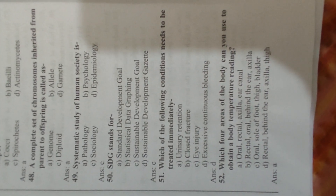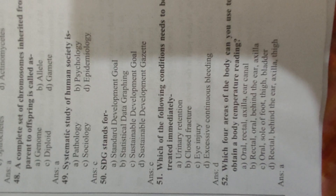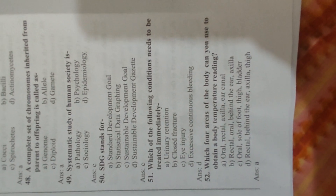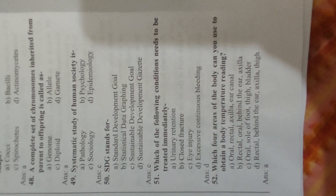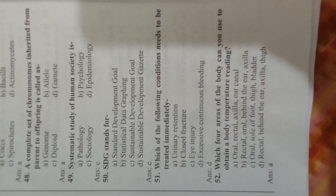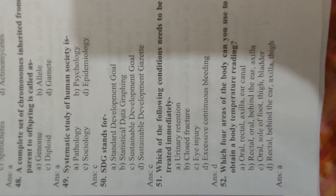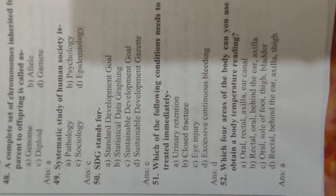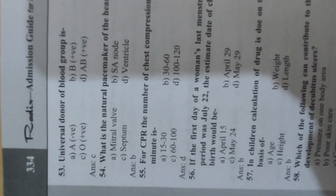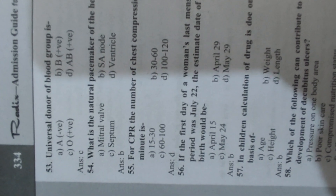Question 47: Which type of bacteria is oval or spherical in shape? Answer A, cocci. Question 48: A complete set of chromosomes inherited from parent to offspring is called Answer A, genome. Question 49: Systematic study of human society is Answer C, sociology. Question 50: SDG stands for Answer C, Sustainable Development Goals.